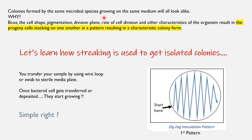Colonies formed by the same microbial species growing on the same media will all look alike, because cell shape, pigmentation, division plane, rate of cell division, and other characteristics result in progeny — daughter cells — which stack on one another in a pattern resulting in a characteristic colony form. As the cell multiplies, daughter cells get stacked upon each other and that results in a colony.